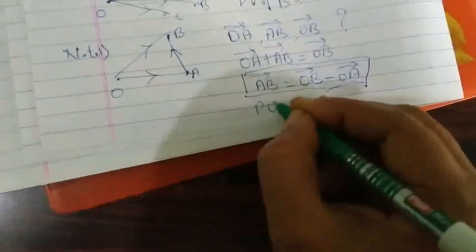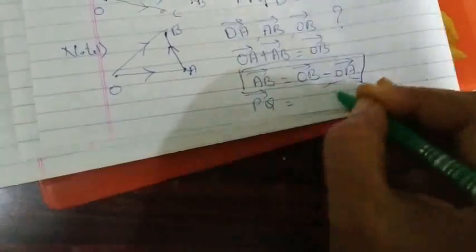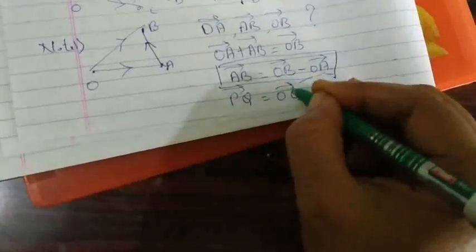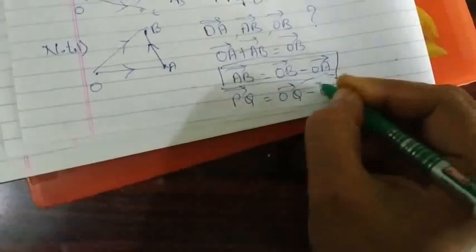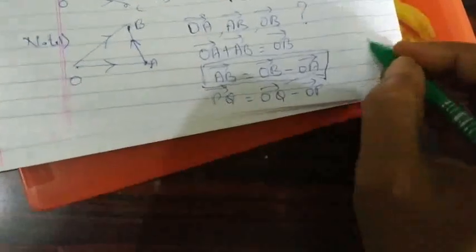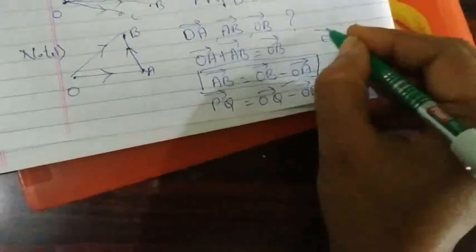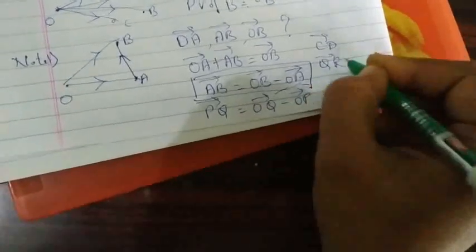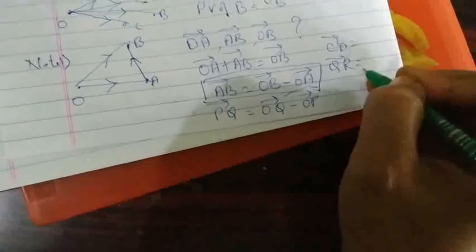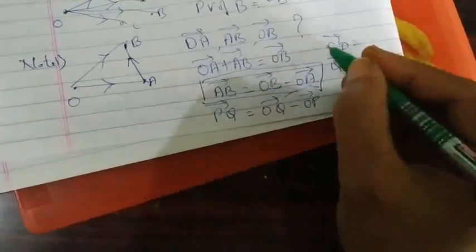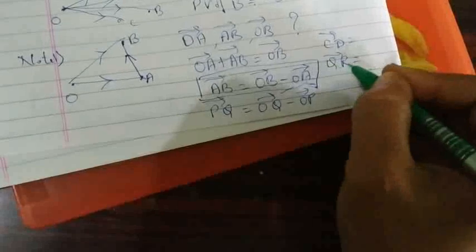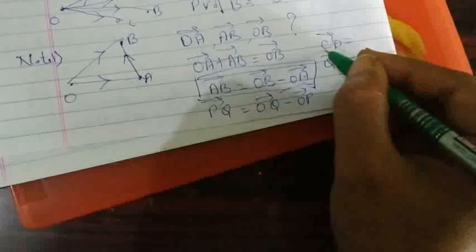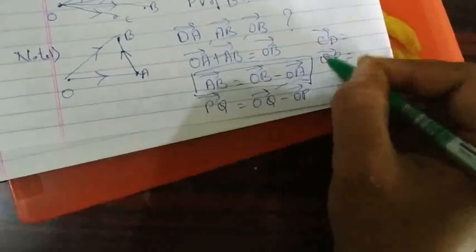Using this formula: PQ vector equals OQ vector minus OP vector. What should CD vector be? What should QR vector be? Write the answers — we will discuss them during the discussion session. CD vector and QR vector in terms of the position vectors of D and C, and Q and R respectively.